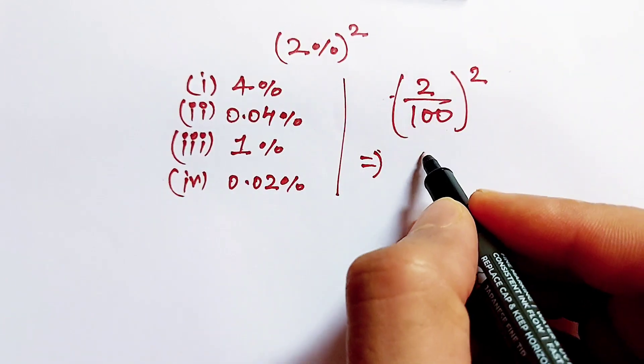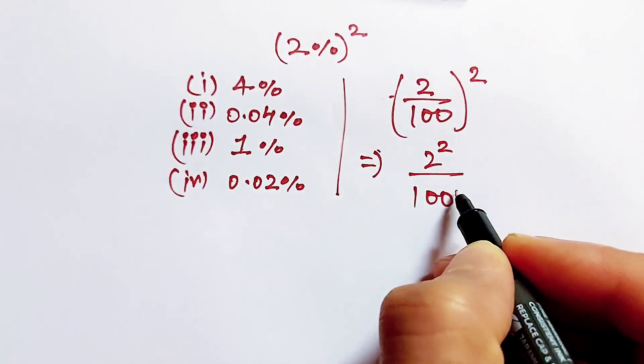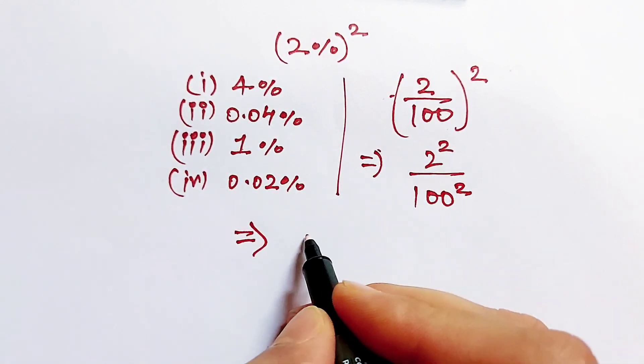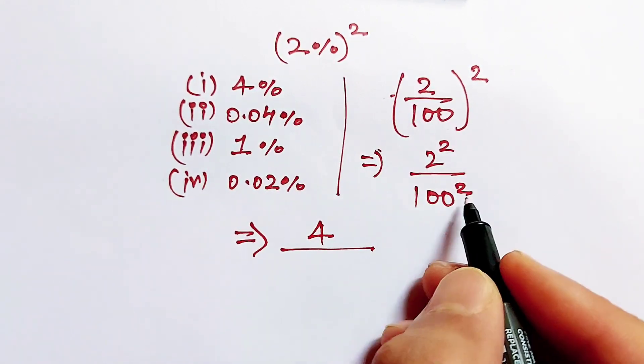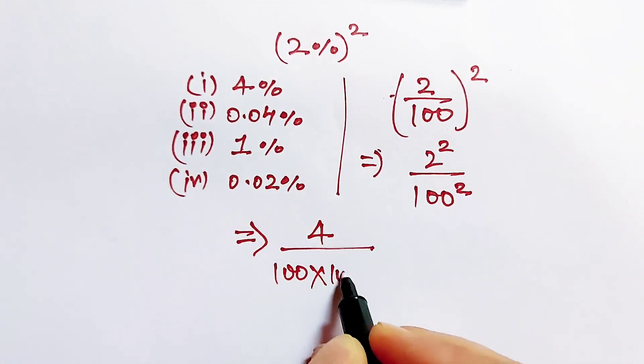Now, this is same as 2 power 2 over 100 power 2. 2 power 2 is equal to 4, and 100 square is 100 multiply 100.